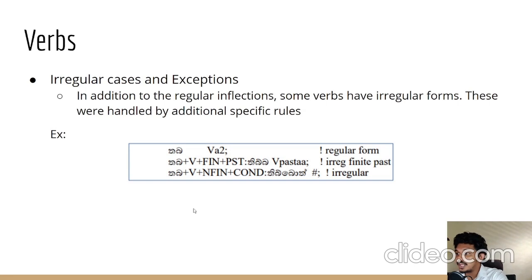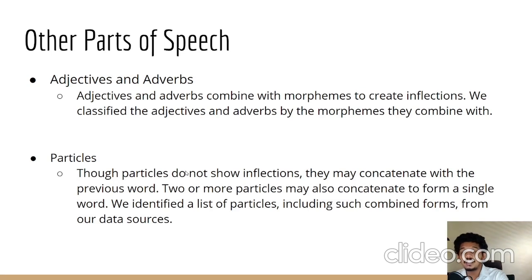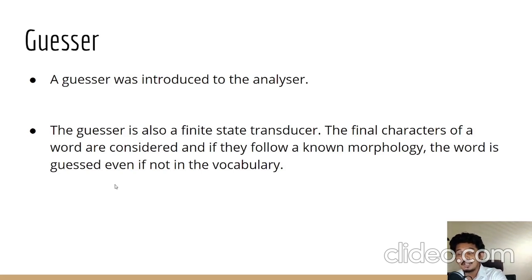In addition to regular inflections, some verbs have irregular forms, which were handled by adding specific rules. Adjectives and adverbs were also handled, classified according to the morphemes they combine with. Particles were handled too — though they do not show inflections, they may concatenate with previous words or two or more particles may concatenate to form a single word. We also introduced a guesser: if a word is outside our vocabulary or the analyzer cannot handle it, the guesser FST is called upon, considering the final characters of the word to guess morphology.